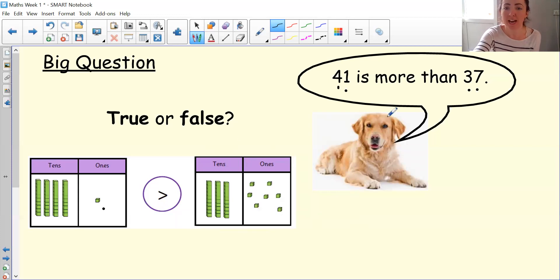The one thing we need to check now is, is 41 really more than 37? Let's have a look. There are fewer ones in 41, aren't there? Because if we compare the ones, there's only one one in 41, whereas there's seven ones in 37. But there are more tens, aren't there? There are more tens in 41 than there are in 37.